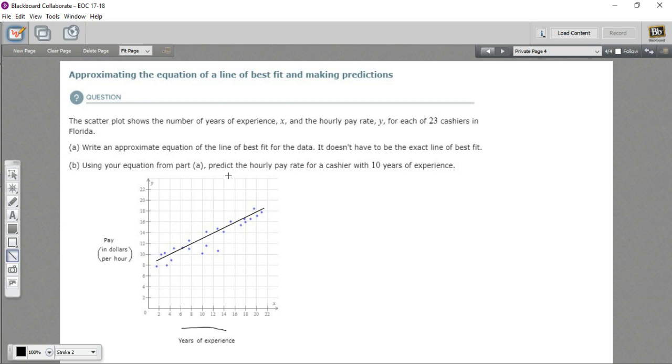In this particular problem, what they want us to do is draw in this line of best fit and then try to make an equation, write an equation that describes that line, and then use that equation to actually make some predictions about some other things. So let's see how that works here. First of all, how are we going to make an equation out of this line that we've just drawn on the graph?